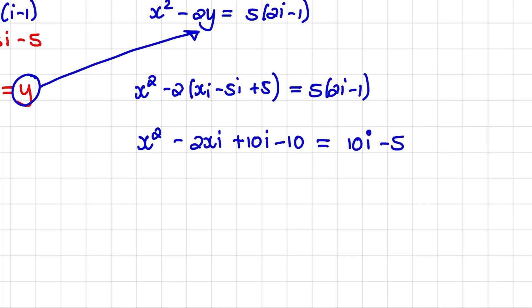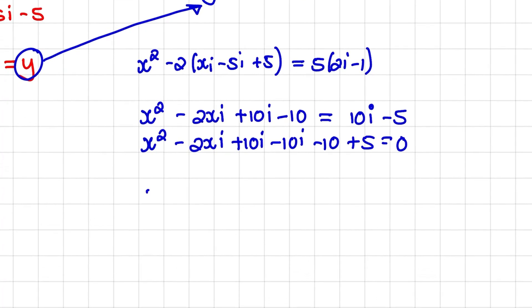Minus 10 is equals to 10i minus 5. And now I will rewrite this in standard form. So it will be x squared minus 2xi plus 10i minus 10i minus 10 plus 5 equal to 0. And when I simplify, I have a trinomial of x squared minus 2xi minus 5 equal to 0.